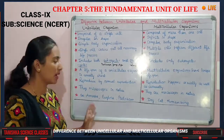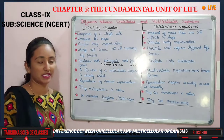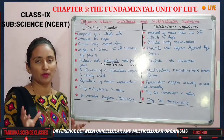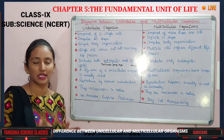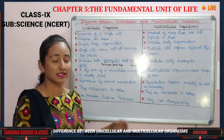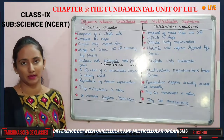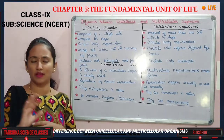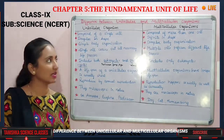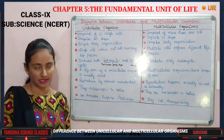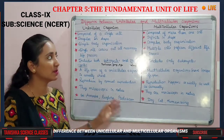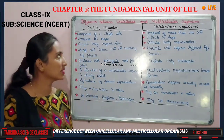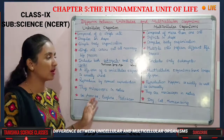Finally, the examples: amoeba, euglena, protozoa, and paramecium are examples of unicellular organisms — a limited number of organisms. For multicellular organisms, we can give countless examples: human beings, cats, tigers, and all plants all come under multicellular organisms.